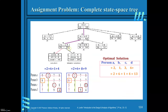Now only 2 jobs are left. If the third person is assigned with job 3, then obviously the fourth person must be assigned with job 4. Since only two options remain, there is no need to find the lower bound — we can find the solution directly. Assigning person C with job 3 and person D with job 4, the total cost is 13.